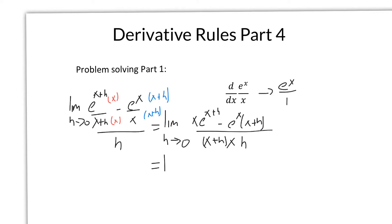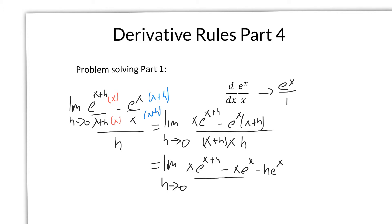Now we go ahead and expand and factor to see what we can come up with. So we get the limit as h approaches 0 of x e to the x plus h, minus x e to the x, minus h e to the x, all over x plus h times x times h.